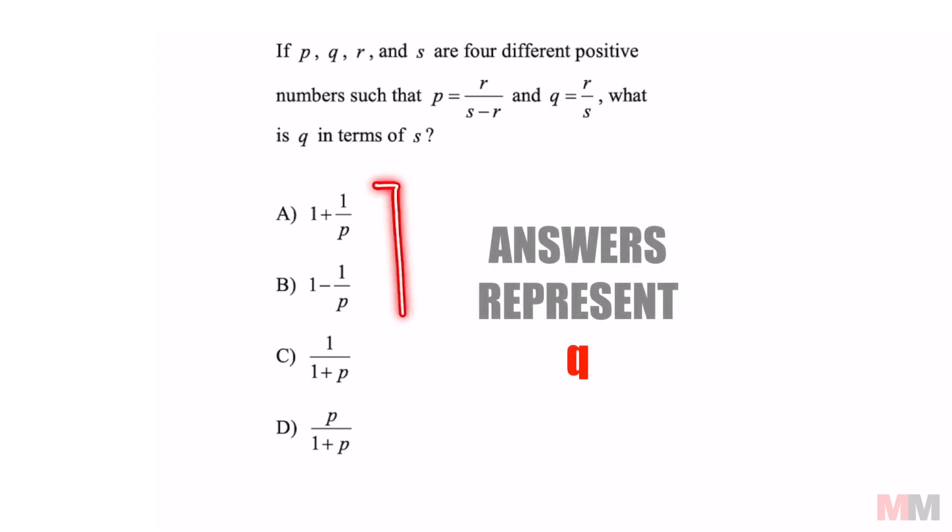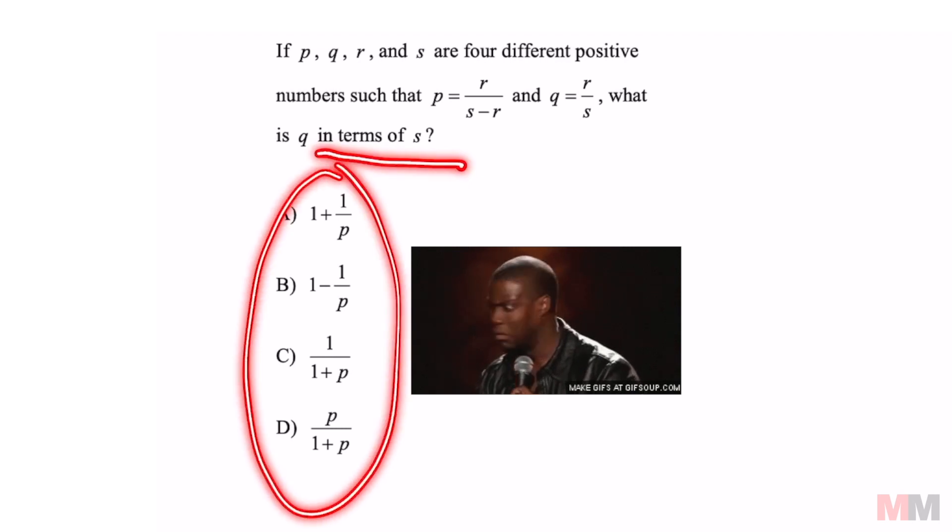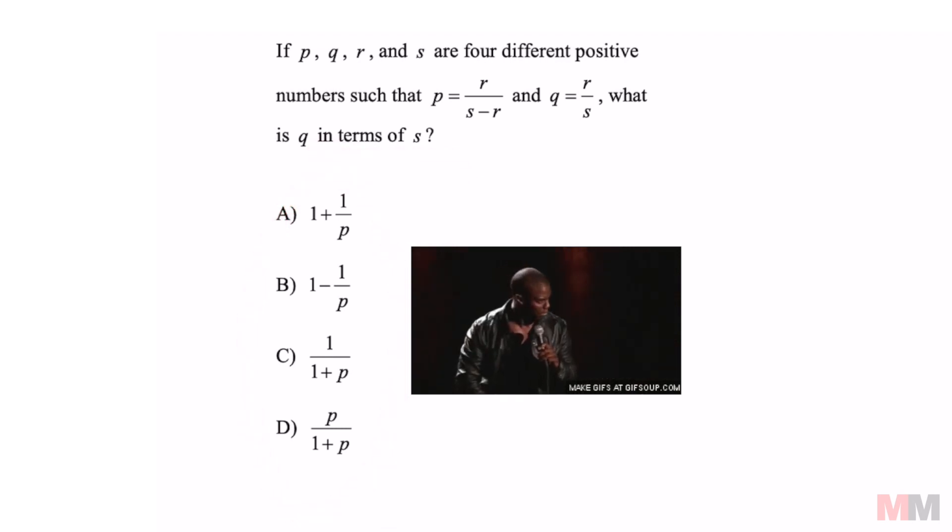So all of your answer choices represent Q because this is saying what is Q, but here's where it was weird. It says in terms of S, but all of these have P's on there. So I'm not sure if that's a broken question or not.